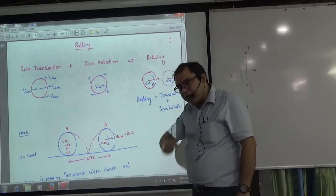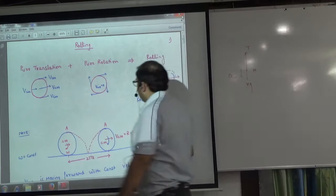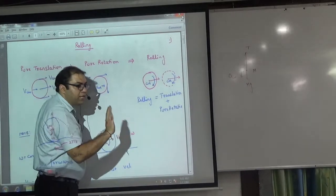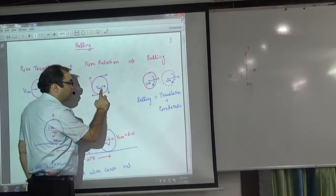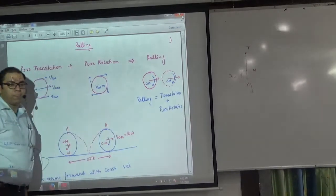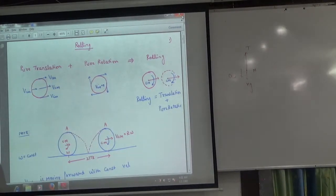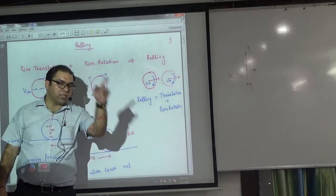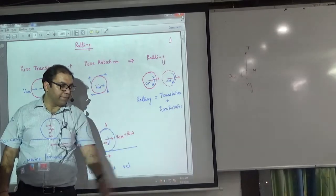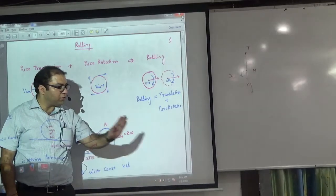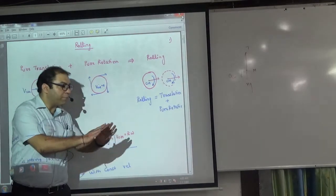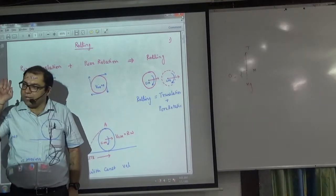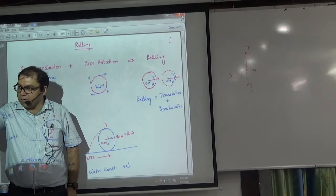Pure rotation means just rotating on its axis. Every particle is going around the axis. The axis itself — the center — is not moving. The velocity of the center of mass is zero. The rest of the particles are revolving around the center. Is pure rotation clear? It's going forward only in rotation, not in translation.